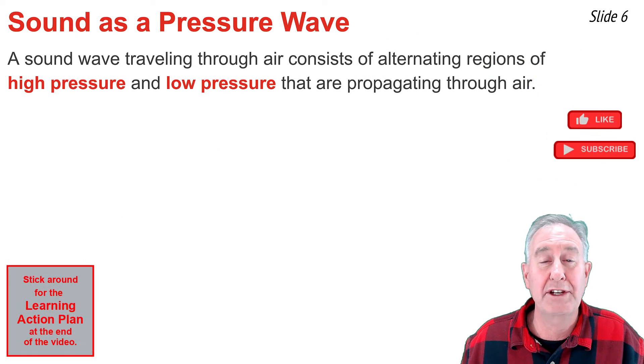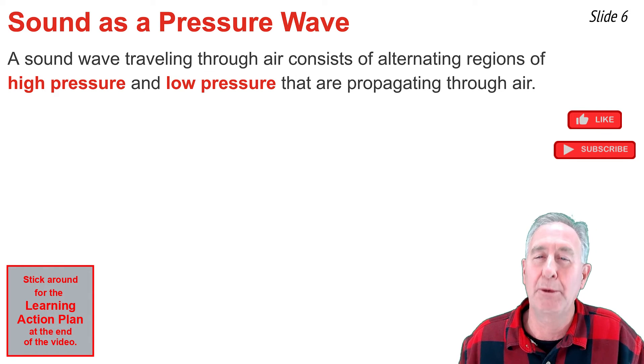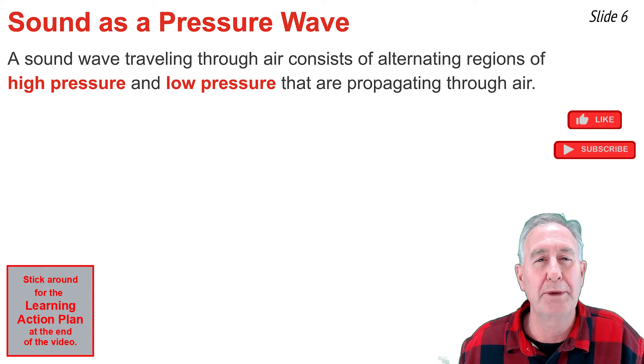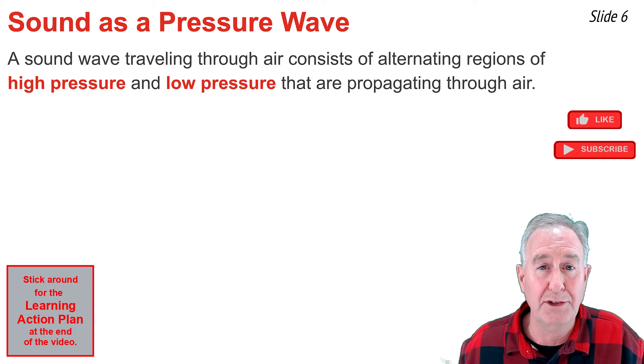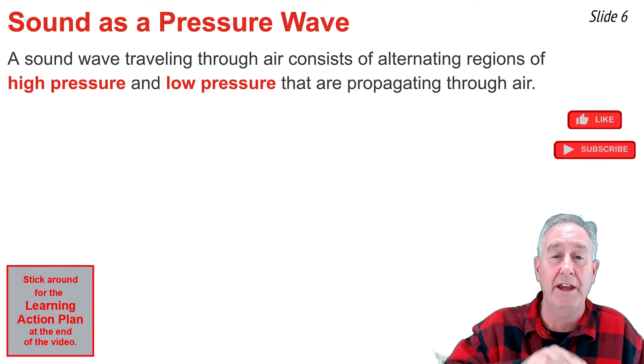A sound wave consists of alternating regions of high pressure and low pressure propagating outwards from the source. For many students, the absence of crests and troughs is quite bothersome because we're used to thinking of a wave as looking like the sine wave on our calculator in math class with crests and troughs.